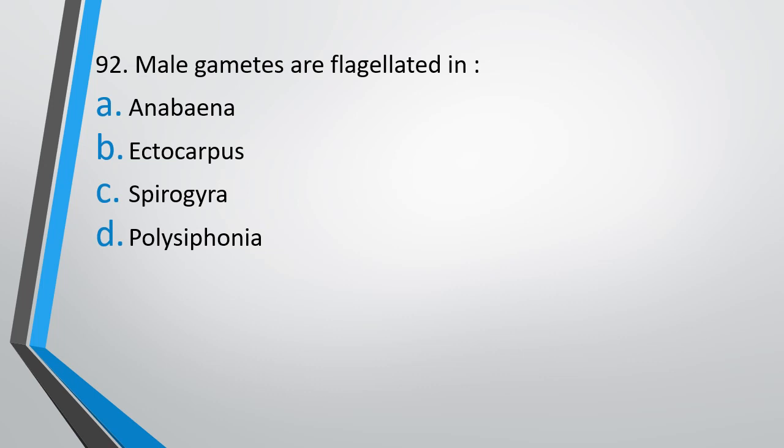Question No. 92. Male gametes are flagellated in which of the following? Option A: Anabaena. Option B: Ectocarpus. Option C: Spirogyra. Option D: Polysiphonia. The correct answer is Option B: Ectocarpus.